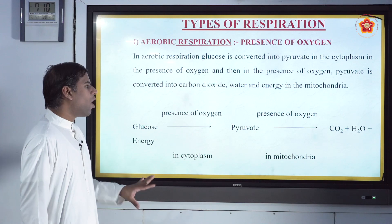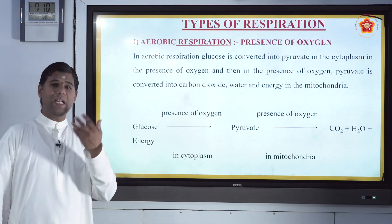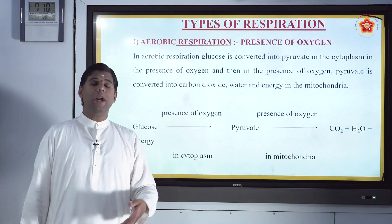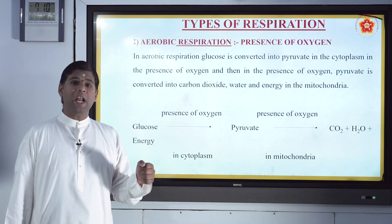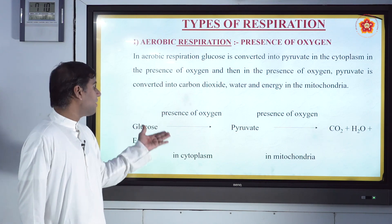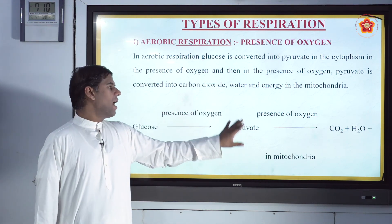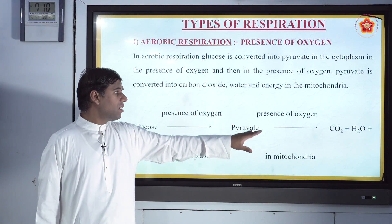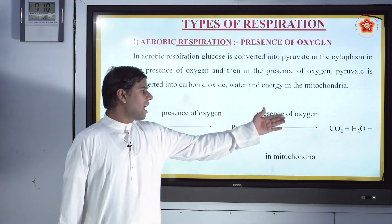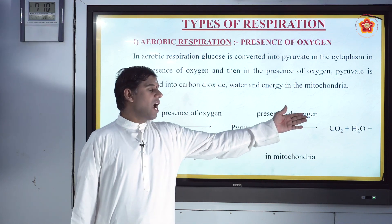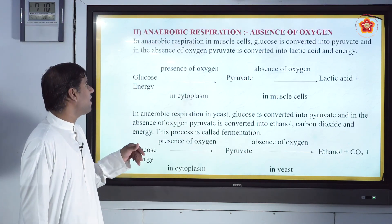So in the presence of oxygen, when you intake glucose, the respiration takes place in the cytoplasm where it gets converted to pyruvate. Then in the mitochondria, it is given back as carbon dioxide and water. Now coming to the next type — anaerobic respiration.